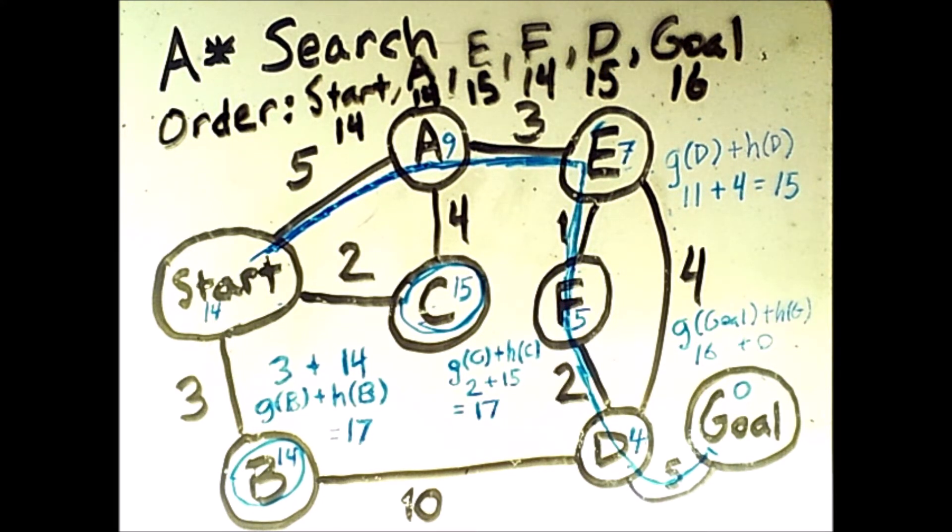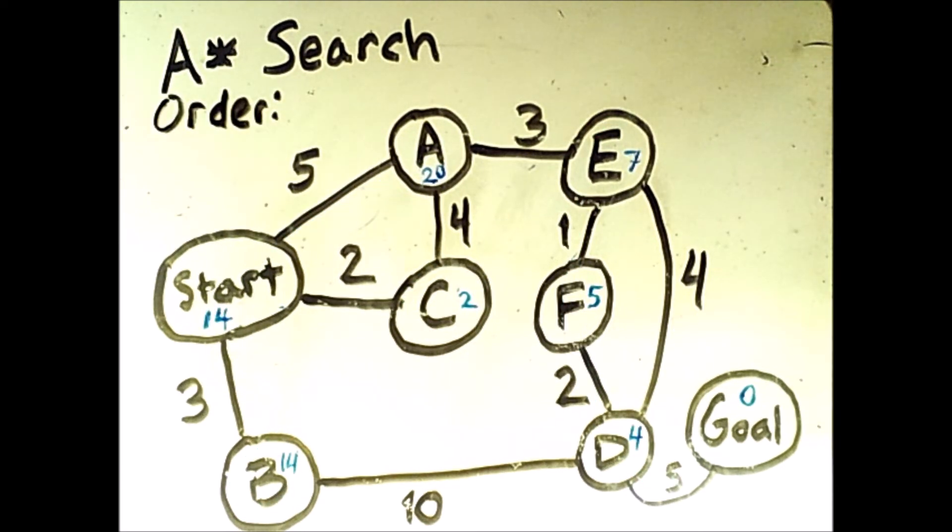However, I didn't tell you how h was defined. In fact, the only reason this worked so well is because the values of h were defined in such a way to make it work out. What if h had had different values? We're going to do this problem again, but I've changed two of the heuristic values. The heuristic value of c is now 2, and the heuristic value of a is now 20.